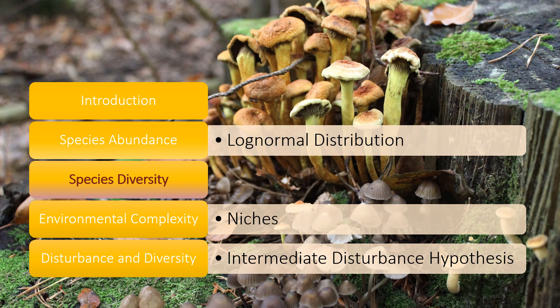Our previous lecture was on species abundance, where we talked about the log normal distribution. This lecture was on species diversity — we talked about the Shannon-Wiener diversity index and rank abundance curves. The next lecture is going to be on environmental complexity and how that influences species diversity, as well as the idea of different niches and having diversity in the niches within a community.